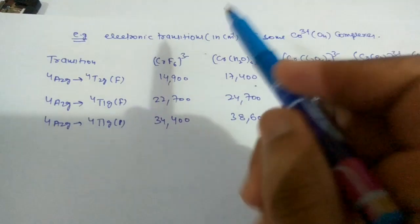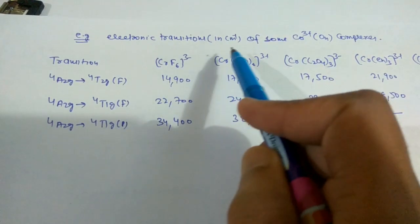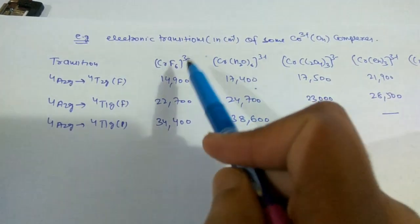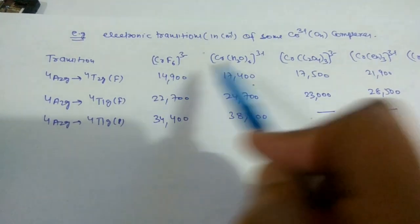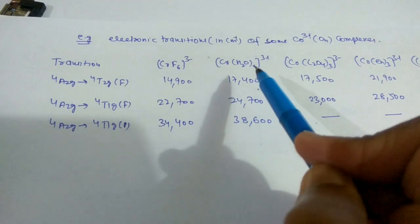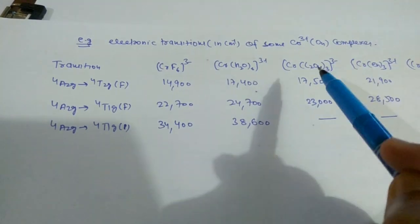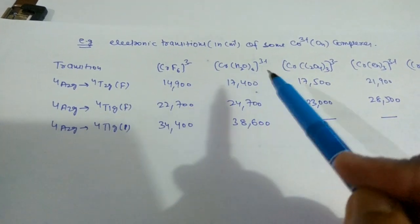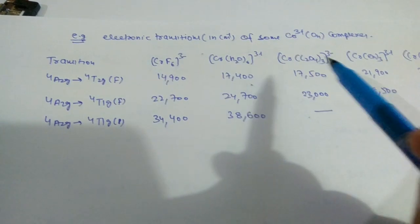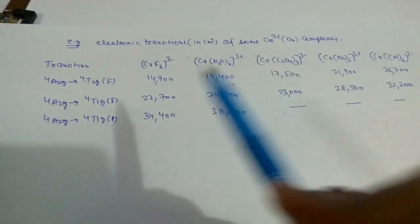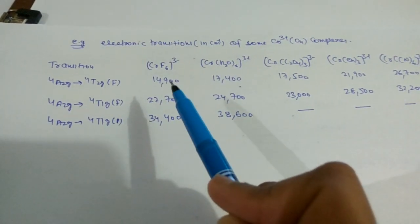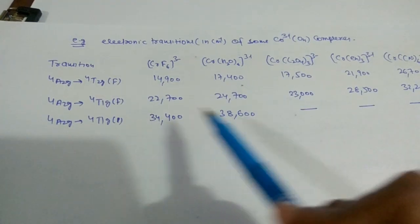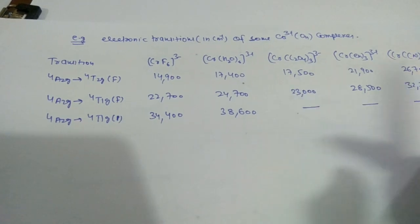Some examples of electronic transitions for chromium(III) complexes are given. As we move from weak-field ligands to strong-field ligands, the value of the transition energy also increases, as shown in the diagram.